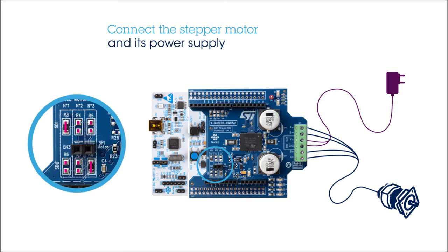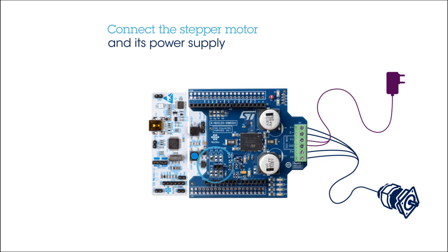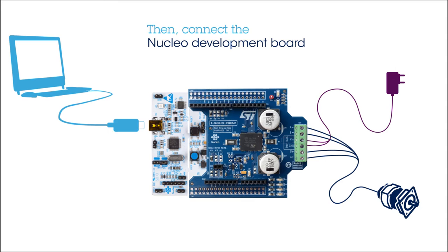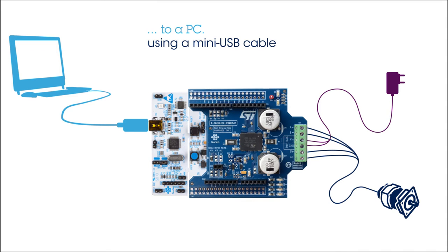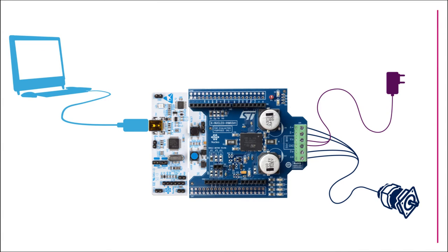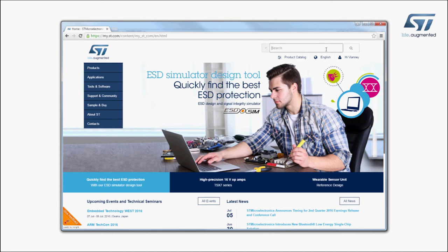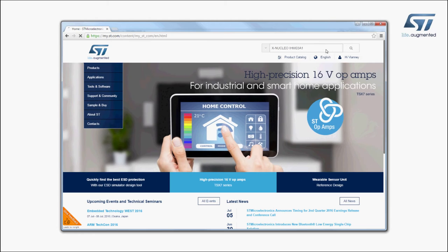The default resistor setup, as shown here, is for a single motor configuration. Next, connect the STM32 Nucleo Development Board to a PC using a mini-USB cable. The board is automatically detected and seen as a disk drive. Visit ST.com and search for the keyword XNucleo IHM03A1.